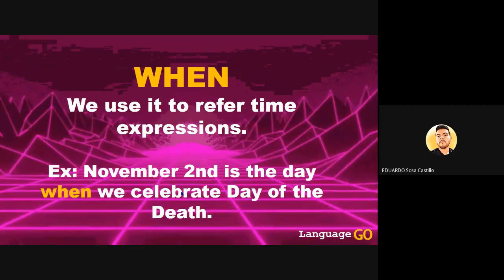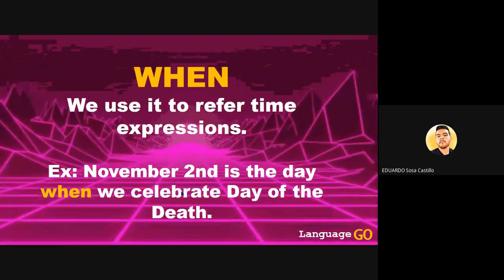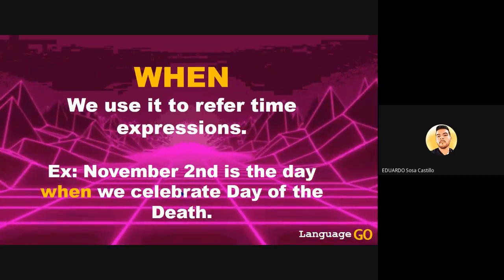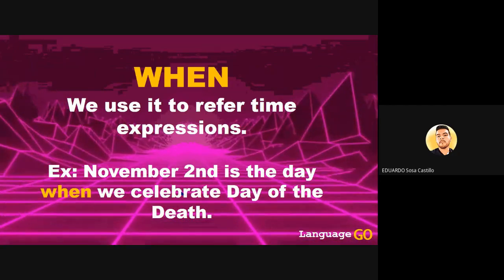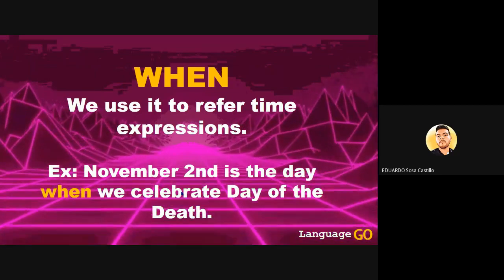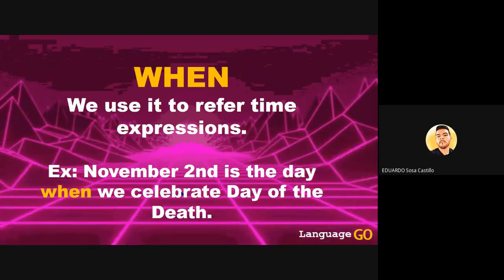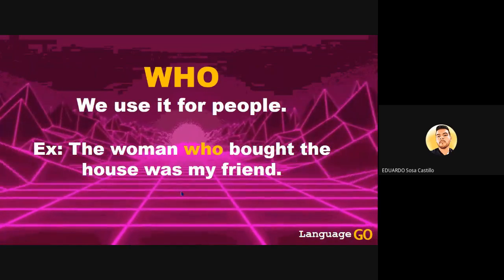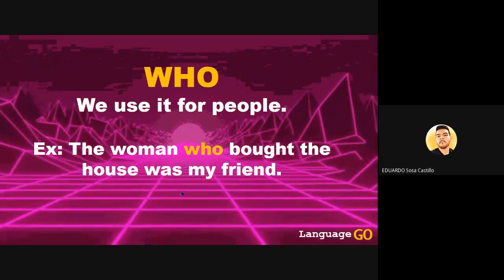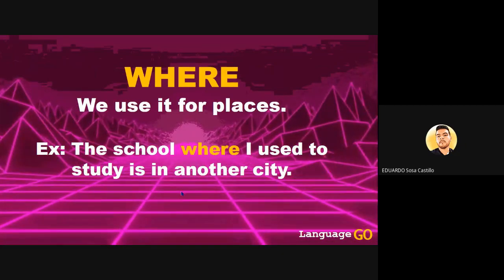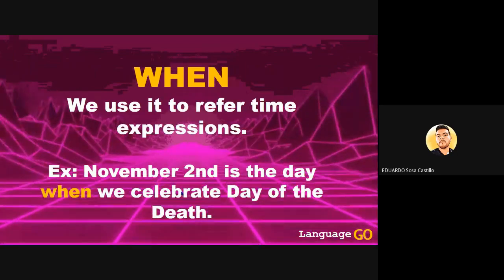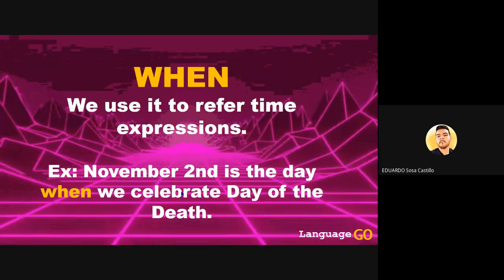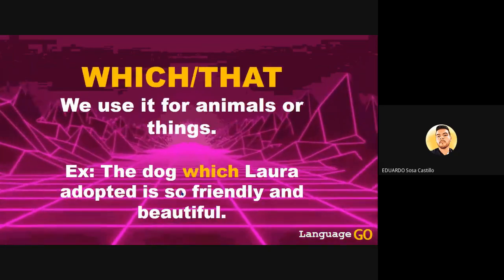Before Gabby arrived, I was telling Griselle that we use 'when' when talking about time expressions. In the sentence, the time expression is 'November 2nd.' Notice how every sentence has a subject: 'the woman' uses 'who' because it's a person; 'the school' uses 'where' because it's a place; and 'November 2nd' is a time expression, so we use 'when.'